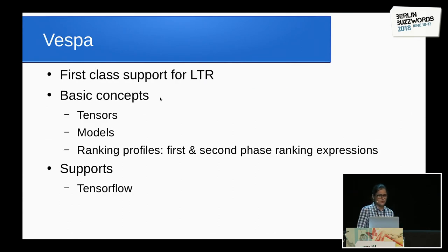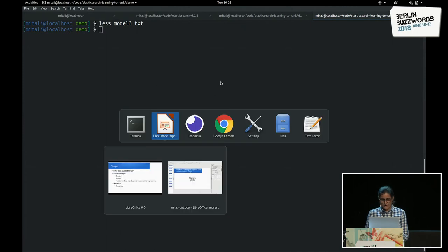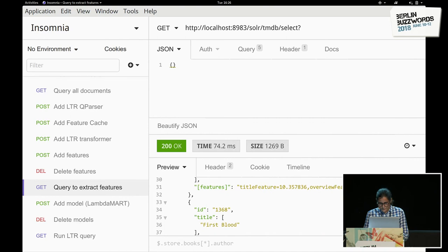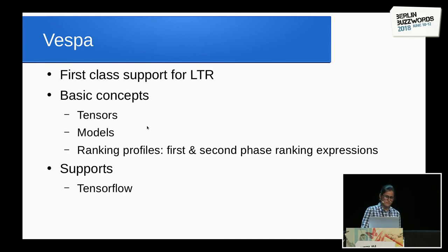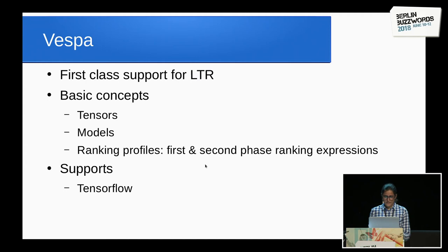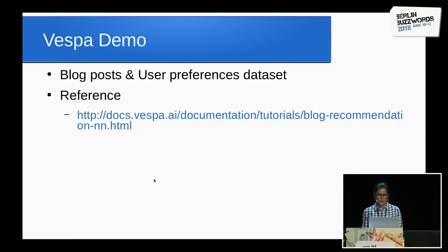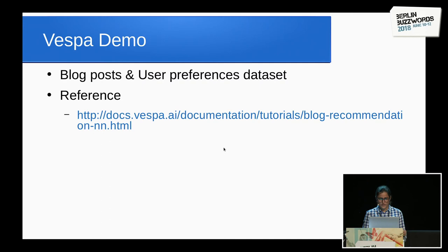We now move on to Vespa, which offers first-class support for LTR. Basic concepts include tensors. Unlike Elasticsearch or Solr where feature value scores are scalar quantities, in Vespa they can be multidimensional quantities as well, called tensors — ranging from scalars to matrices to higher dimensional values. There are also models, and first and second phase ranking expressions. Vespa supports the TensorFlow library. We use real-world data from a Kaggle competition involving blog posts — about 1.1 million blog posts capturing users' preferences for liking those posts.